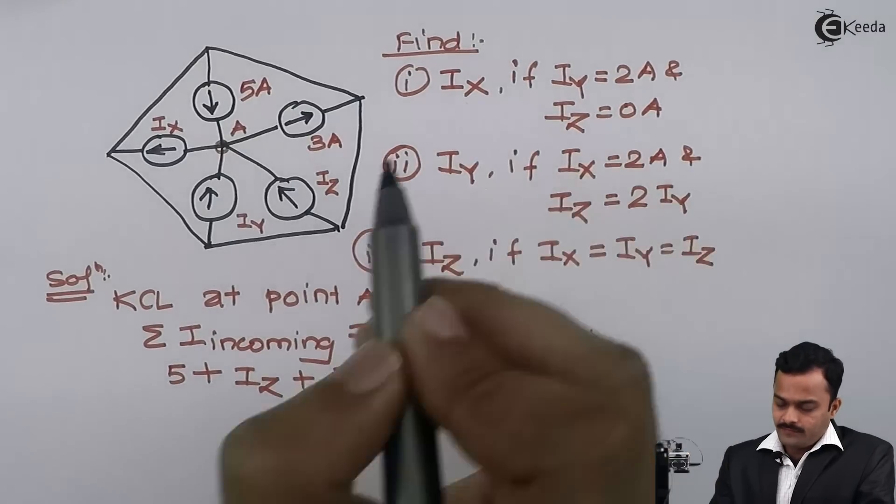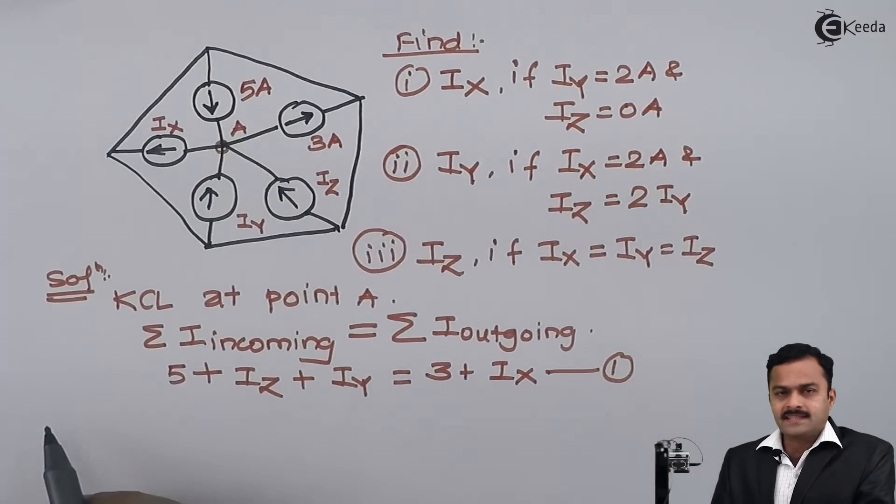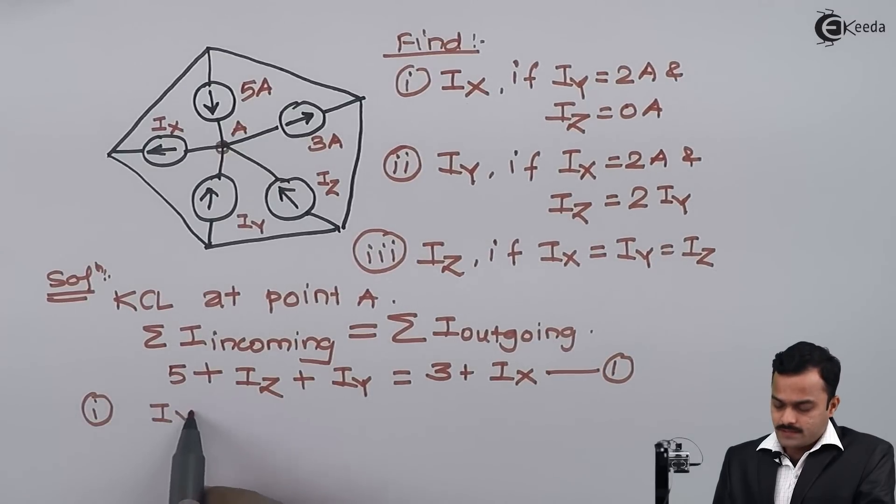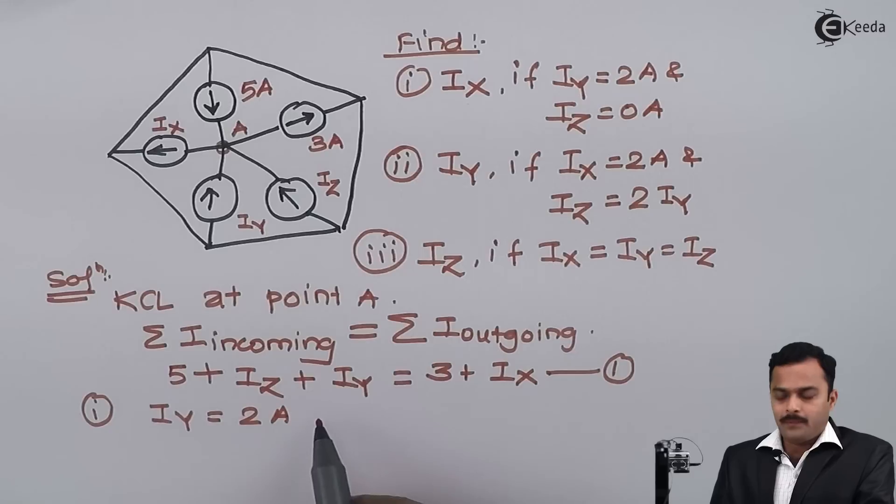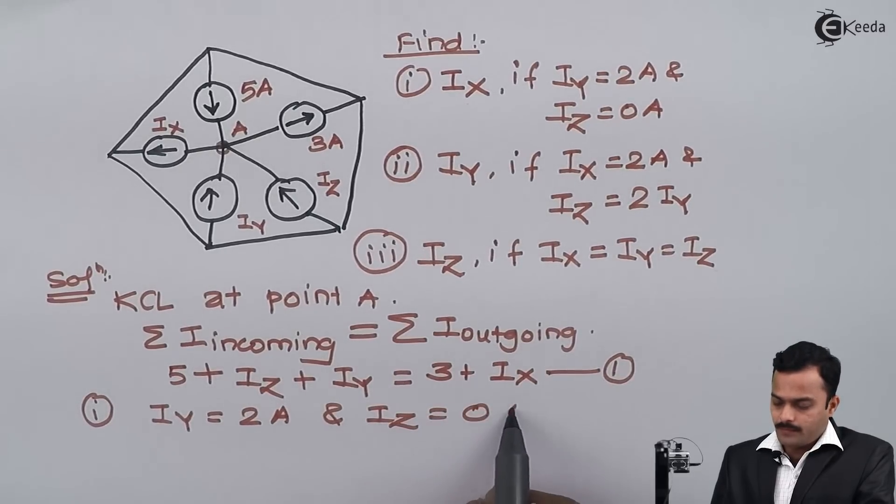Now in the first case I want, so this expression will remain as it is for all the three cases. So first case I am considering if iy value is 2 ampere and iz value is 0 ampere.